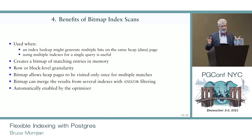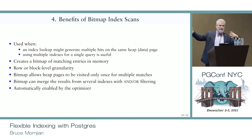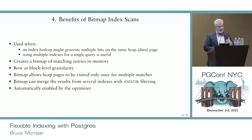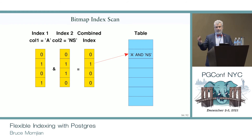Let's look at bitmap index scans. A bitmap index scan happens when you have an index that might generate multiple hits on the same page — you have duplicates. Instead of revisiting the same page multiple times, you create a bitmap and hit each page in sequential order, rather than bouncing to page 5, then 12, then back to 5. It allows you to use multiple indexes for the same query. It creates a bitmap of matching entries in memory, with either row or block level granularity. It's used for AND/OR type queries and is part of the optimizer.